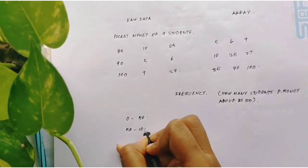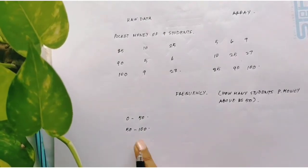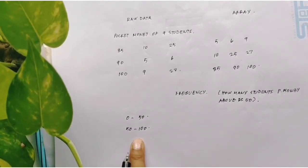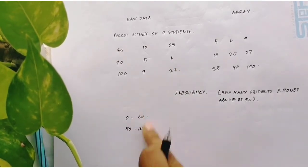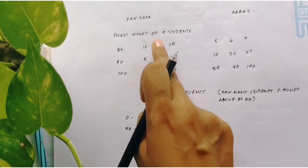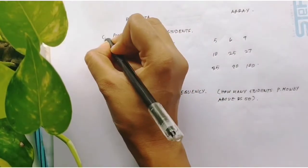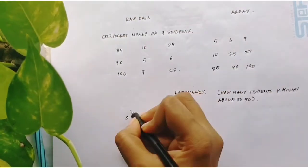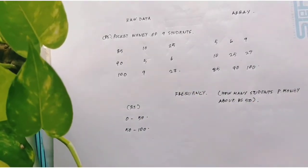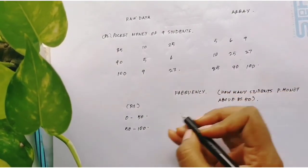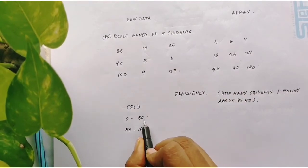Now what is the unit of these numbers? You see this group is coming from this data. The unit of this data is pocket money. Pocket money is what? Rupees. So the unit of this is rupees. Now we want to know the frequency.